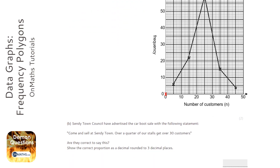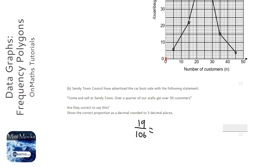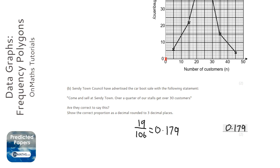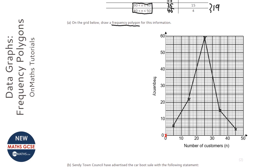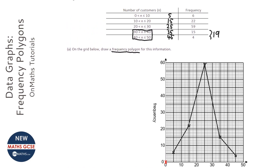19 out of 106 as a decimal is 0.179 to three decimal places. So in the exam I would say: no, because that is 17.9%, which is less than 25%. Write a sentence saying it's close but not quite a quarter — even rounding up to the nearest percentage it's 18%, which is 7 percentage points lower than 25%. Make sure you write all the numbers in an answer that actually addresses the question.